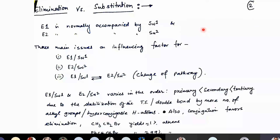E1/SN1 and E2/SN2 actually varies in the order of primary to secondary to tertiary. As you know, for tertiary, SN2 is not very much favorable. So from primary to secondary to tertiary, your elimination would be much, much easier than substitution, due to the stabilization of the transition state or double bond by a greater number of alkyl groups or hyperconjugable hydrogen atoms.